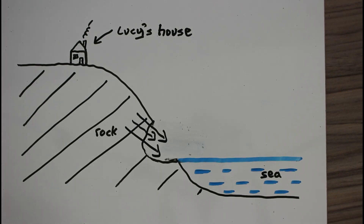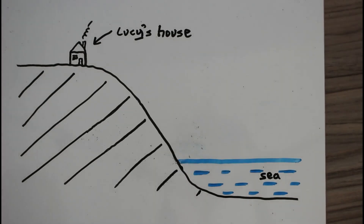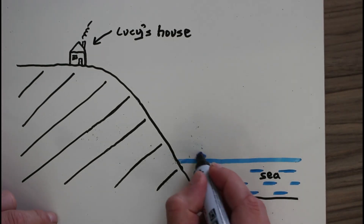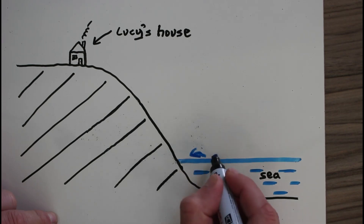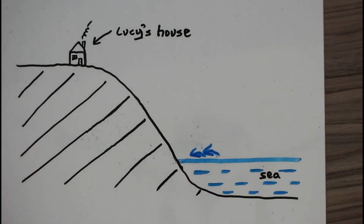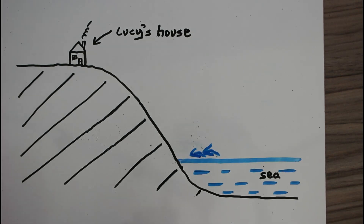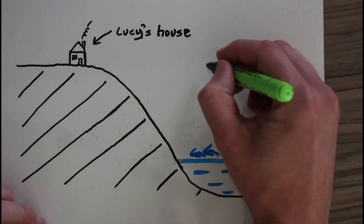Now we're going to see what can be done about it so that Lucy's house is protected. The waves from the sea are crashing in at this height, so the first thing that we can do is build a barrier to protect the rock of the cliff.